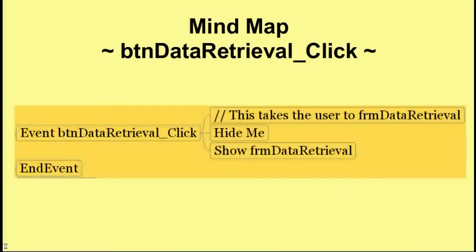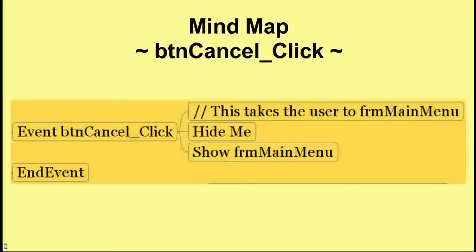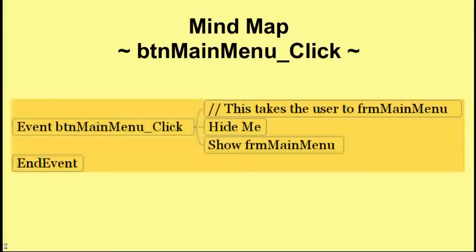We can carry that logic across to the next three events. The event BTN data retrieval click takes the user to FRM data retrieval — hide me will hide the current form, main menu, and show form data retrieval will show the form we want. Similarly, button cancel hides the data entry form and shows form main menu. And button main menu click takes the user to the main menu form from form data retrieval — hide me, show form main menu.